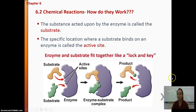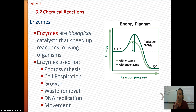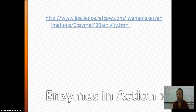An enzyme fits together with specific substrates, making them reaction-specific. The specific location where a substrate binds to an enzyme is called the active site. Substrates bind to enzymes at the active sites, making the product happen faster and with less energy. Biological processes that use enzymes include photosynthesis, cell respiration, growth, waste removal, DNA replication, and movement. Remember: enzymes speed up reactions and lower activation energy. Make sure you answer all your questions so you can use your notes — have a great day!